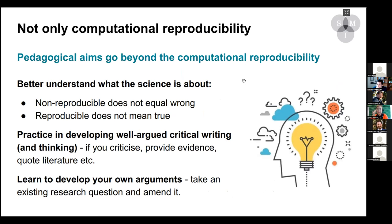Teaching reproducibility and asking students to replicate one model — engaging with this one argument — goes beyond computational reproducibility skills, which we all appreciate for the methods, analytical thinking, and professional data organisation. Because this is focused on one argument, they're also practising writing a well-argued research report. This is not overwhelming in the way that next year they have a dissertation where they have to develop a few research questions on their own — but now they're working with only this one argument and trying to polish it very well.